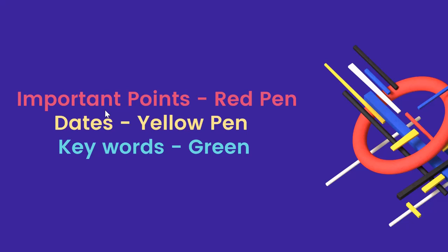Maan lijiye, aap history ke notes bana rahe hai, aap koi theory part ke biology ke notes bana rahe hai — toh jo bhi important points hain, woh aap red pen se likh sakte hai, jo bhi dates hain, woh aap yellow pen se likh sakte hai, aur jo bhi keywords hain, unko aap green se likh sakte hai. Agar aap har point pe pen change nahi karna chahte, so you can make a habit of highlighting things — aap ek highlighter use kar sakte hai, ya phir colored pen se sirf ek niche line draw kar sakte hai, underlining kar sakte hai.